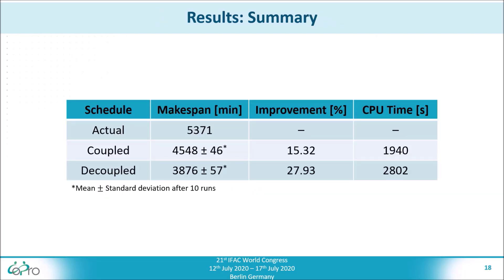Comparing the makespan of the actual schedule provided by the plant schedulers to the ones obtained by our scheduling algorithm shows that significant improvements can be achieved. The decoupled layout provides greater improvements, which can mainly be attributed to the higher processing rates due to the desynchronized operation of the two stages.